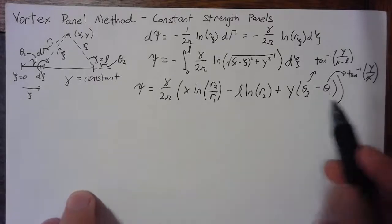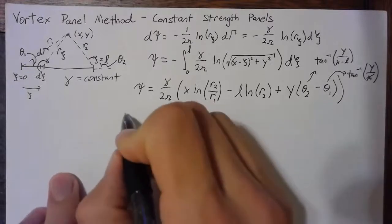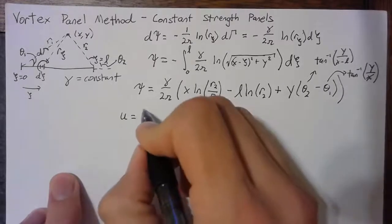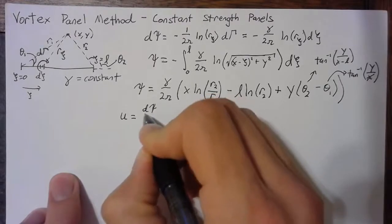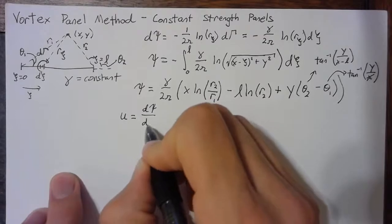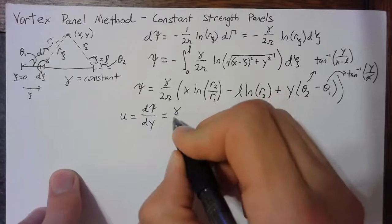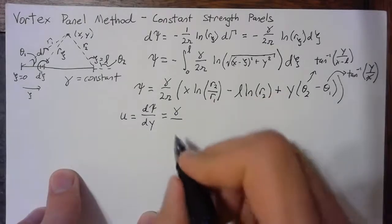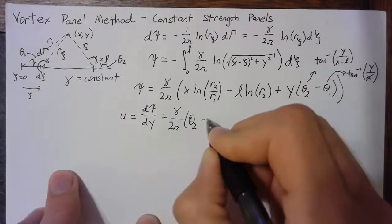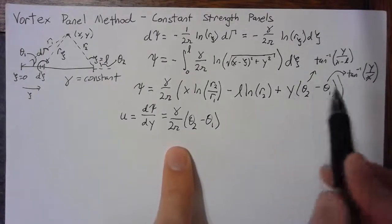Likewise, you can take the derivative in the same way or you can just brute force the derivative to find the value of u and v. u is equal to the derivative of our stream function psi with respect to y. There's a lot more terms here, but the one that we're interested in is gamma over 2 pi times theta2 minus theta1, which comes specifically from this term.